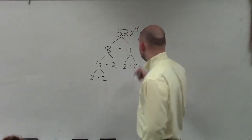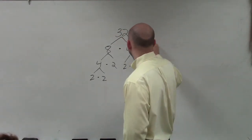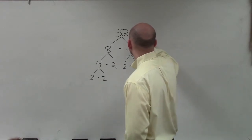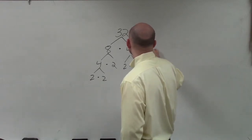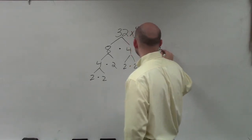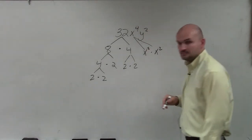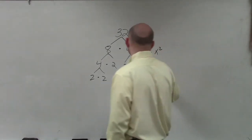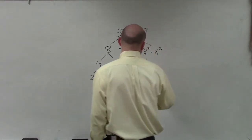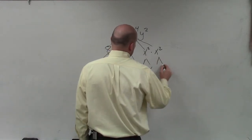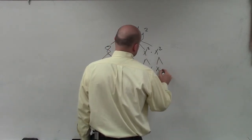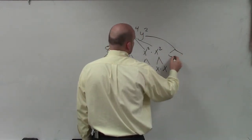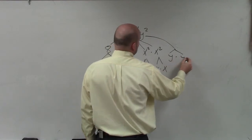x to the 4th can be broken down into x squared times x squared. x squared times x squared — add the powers — and then I can break that down into x times x. And this I can break down into x times x. And then the y, I can break down into y times y.